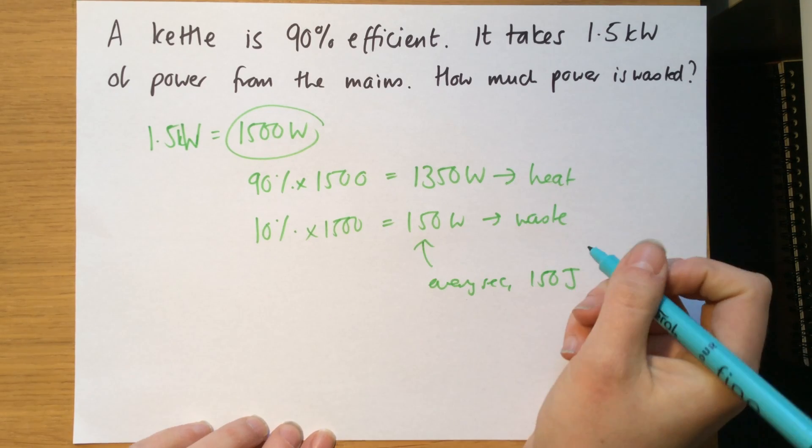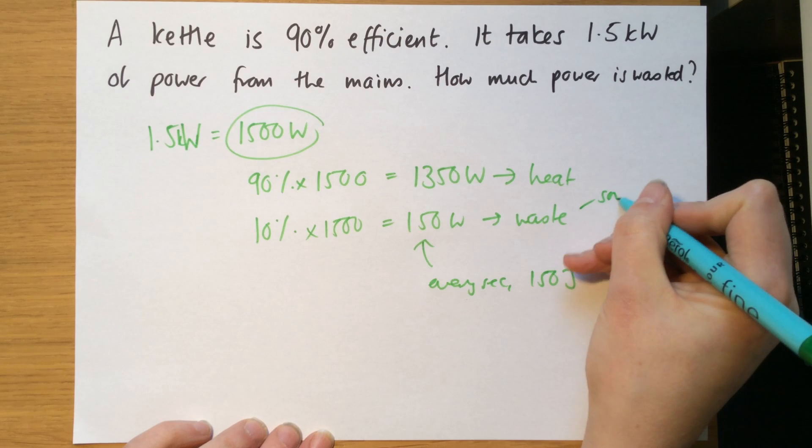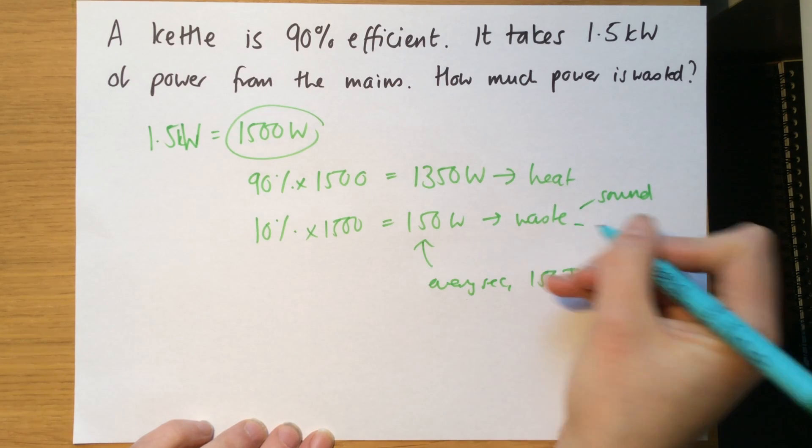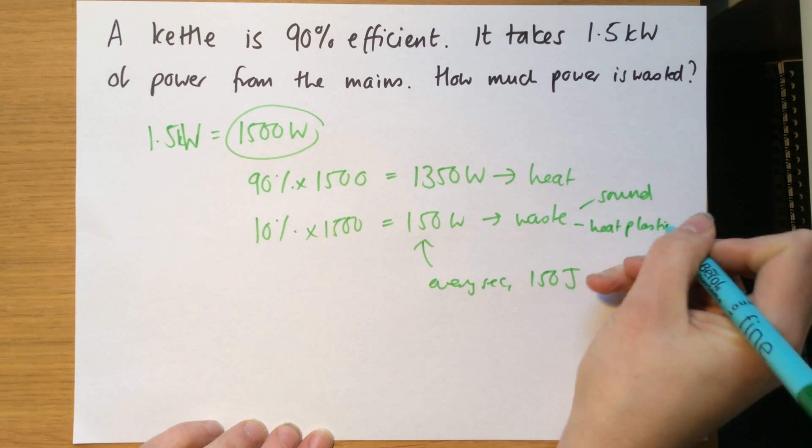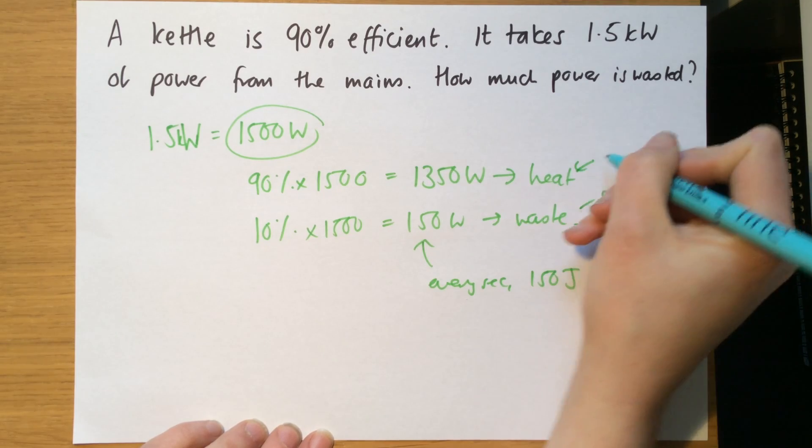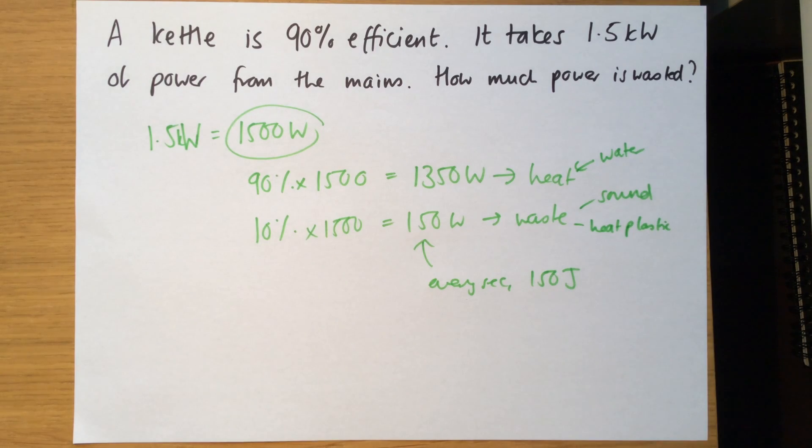Now, that waste is gonna be sound energy you can hear when a kettle boils, it makes some noises. And also, it's when it heats up the plastic of the kettle, and not the water. So the useful energy is heating the water, the waste energy is heating the plastic and the surroundings of the kettle.